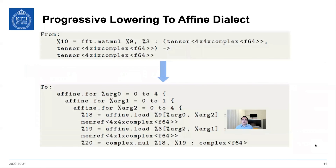For the computationally intensive part, we implement that through the affine dialect. Here is an example from an operation in the FFT dialect. It operates on the tensor type, and by lowering it down to affine, it is implemented by a nested loop and operates on the memref, which is closer to the computer resource. For now, I'm working on implementing vectorization for the complex data type, which hasn't been done in MLIR.